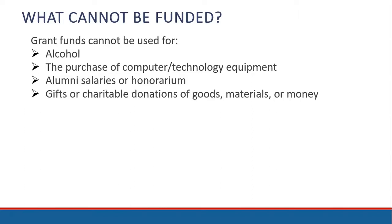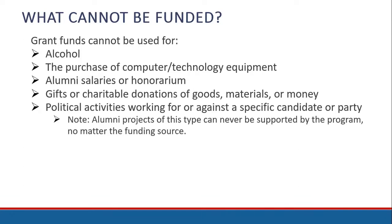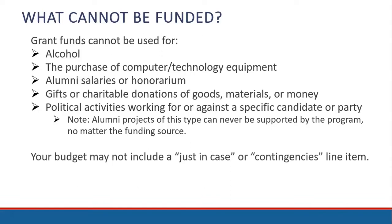Gifts or charitable donations of goods, materials, or money are also ineligible — alumni grant funds are intended for the implementation of projects organized and developed by alumni, not for donations. This includes anyone associated with your project: no gifts to beneficiaries, trainers, or volunteers will be approved. Grant funds also cannot be used for political activities working for or against a specific candidate or party — alumni projects of this type can never be supported by the program, regardless of funding source. Also, your budget may not include a just-in-case or contingencies line item. It is your duty as the applicant to carefully consider your needs and thoroughly research the cost of every project resource in your budget.